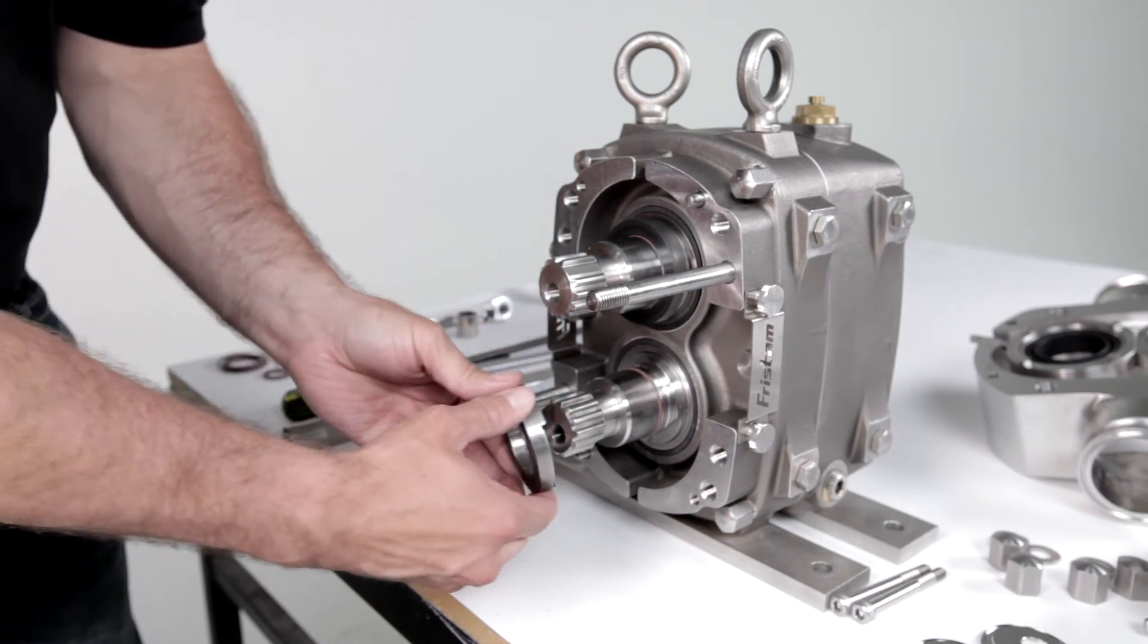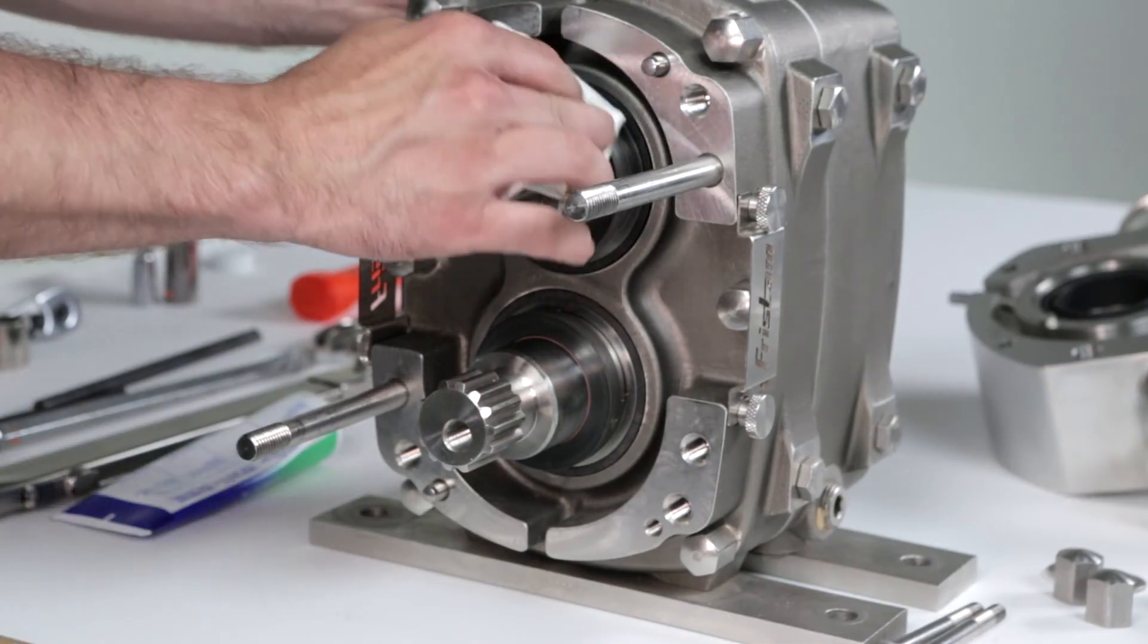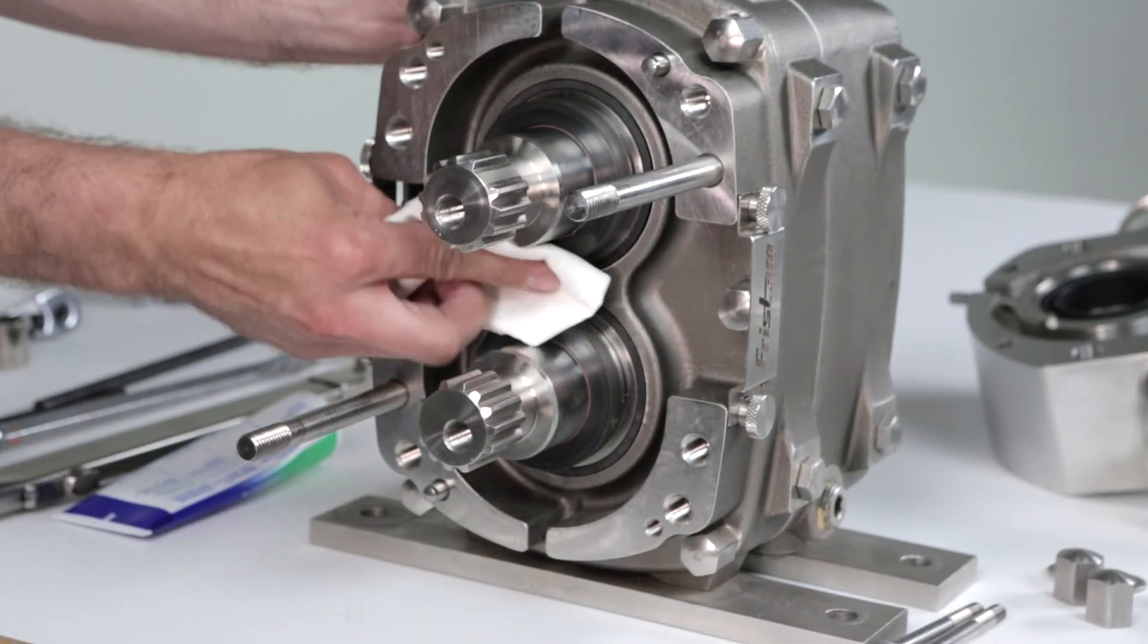The rotating seal o-ring will be visible if the seal is seated properly. Gently clean the rotating seal surfaces with alcohol.